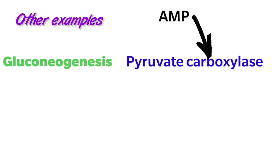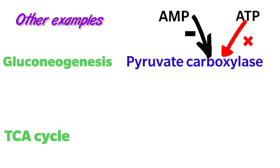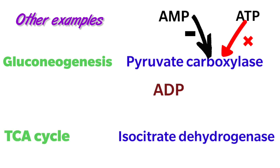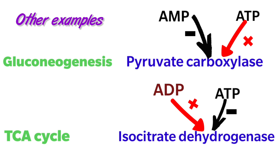Other examples of key enzymes or rate-limiting enzymes: in the case of gluconeogenesis, one of the key enzymes is pyruvate carboxylase — its activity is decreased by AMP and increased by ATP. The key enzyme of the TCA cycle is isocitrate dehydrogenase, whose activity is increased by ADP and decreased by ATP.